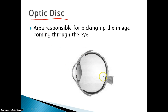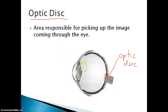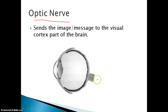Our next structure is the optic disc — that is the area responsible for picking up the light or the image that we see. Light is going to enter straight back and be projected onto the back of our eye; the optic disc is the area responsible for picking up that image. The optic nerve is a nerve behind our eye that will send a message to the visual cortex part of our brain — it sends the image or impulse to our brain so that it can be processed.